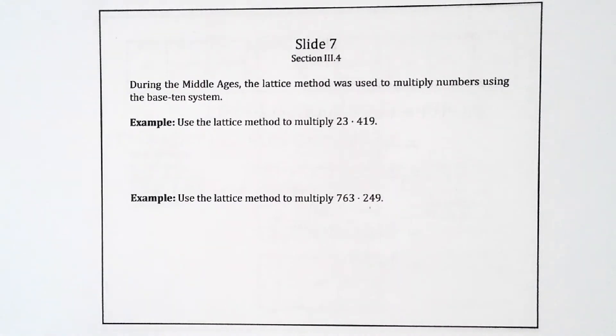They used something called the lattice method. And I'd like to show you this, partly because I think it's interesting, partly because sometimes it's nice to have a different way to do things when you're working with students. It can revive interest in a topic that's kind of dead to them. And also because I have heard that some school districts actually use this to teach mathematics. They do this in elementary school. And I think it's good for you all to have seen this. So the lattice method, let's use the lattice method to multiply 23 and 419.